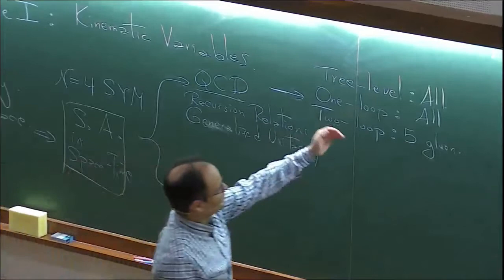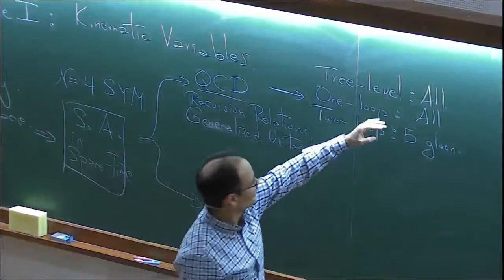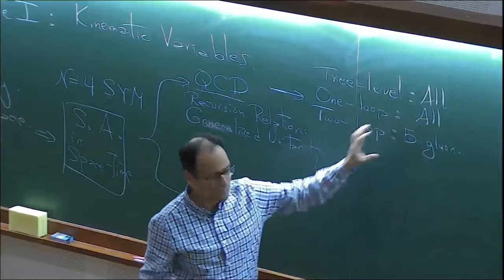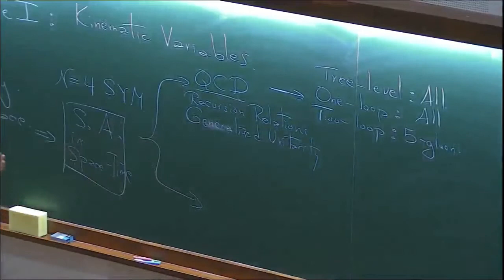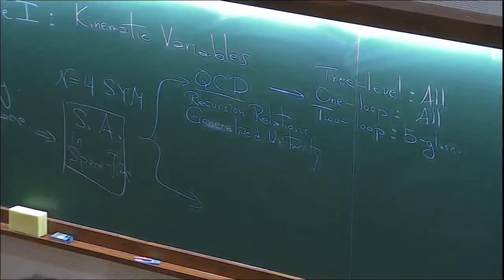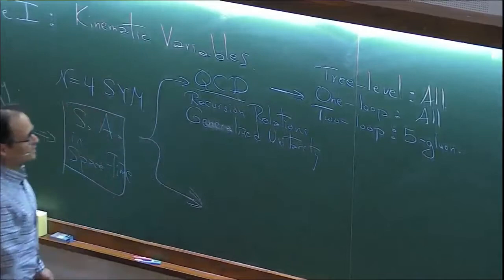It would take too long to explain the situation before 2003, but these two-loop five-gluon calculations are very impressive. These results are important for the LHC — every time you go to next-to-leading order, you improve the predictions you can make. If you have a machine costing billions of dollars, you want predictions that match experimental accuracy.